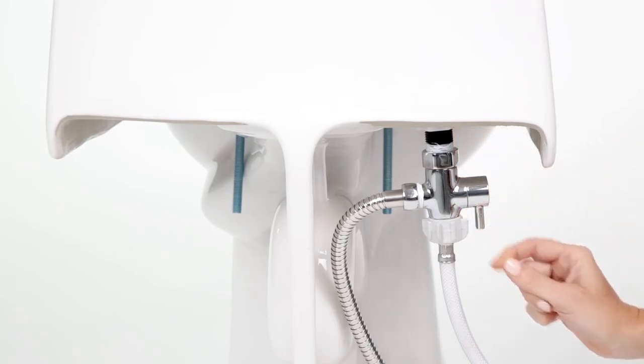To use, turn the bidet valve lever up to allow water to flow through the hose. Make sure to turn the valve off after every use.